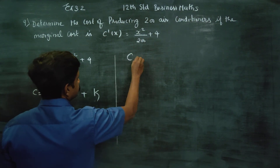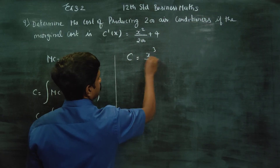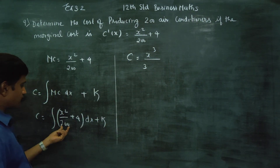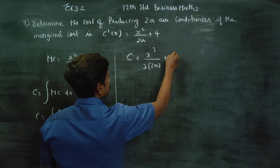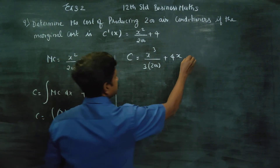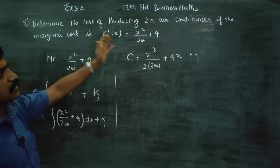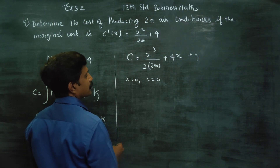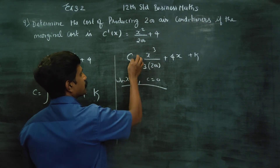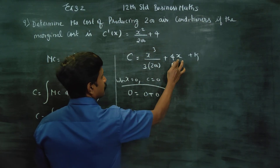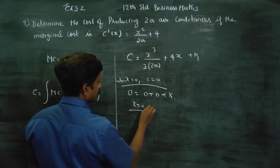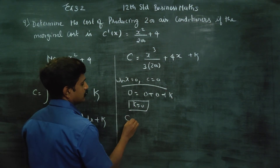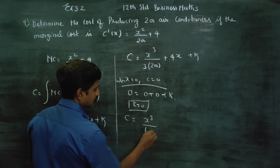Now we integrate. Cost is equal to x squared integrated gives x power 3 by 3. The power becomes 2 plus 1 equals 3, divided by 200, giving x cubed by 600, plus 4x plus K. So cost equals x cubed by 600 plus 4x plus K.